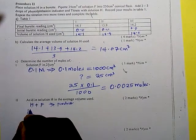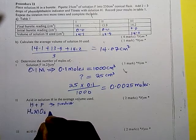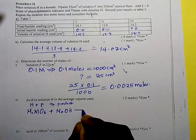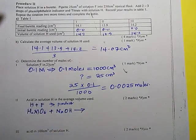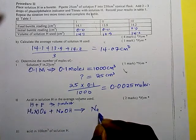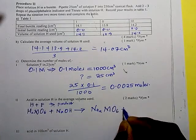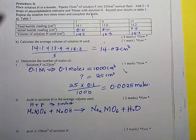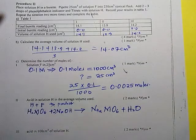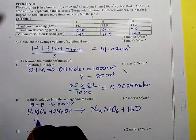The reaction is: H₂MO₆ + 2NaOH → Na₂MO₆ + H₂O. Because H₂MO₆ is a dibasic acid, similar to sulfuric acid, it requires two moles of NaOH. Balancing the equation tells us the ratio of acid to base is 1 to 2.